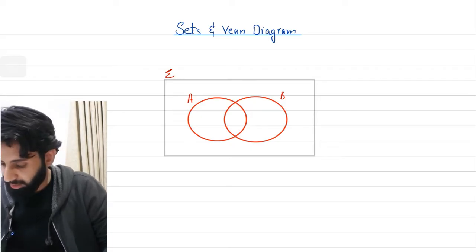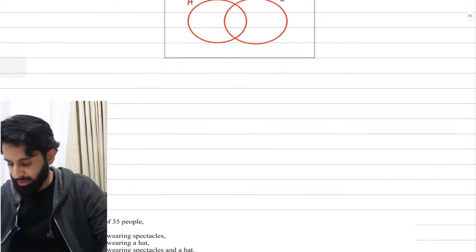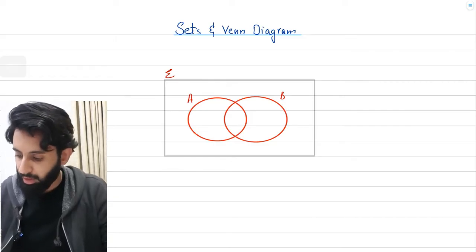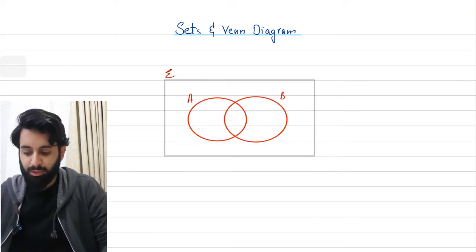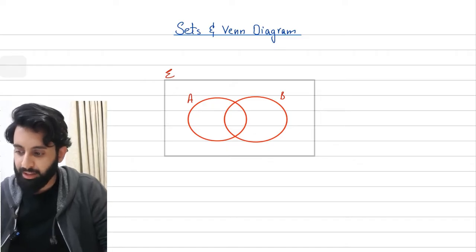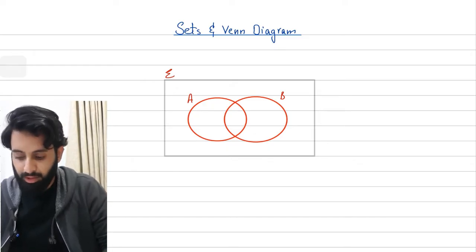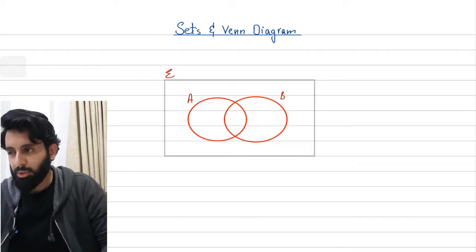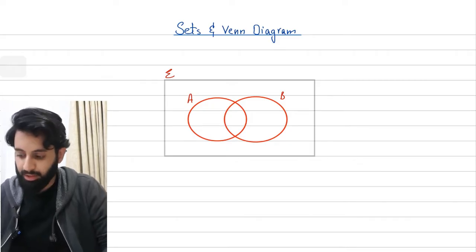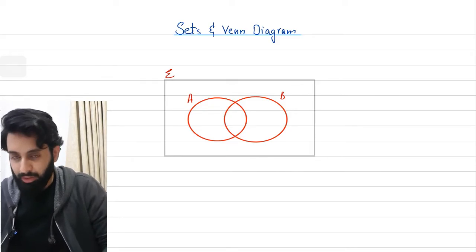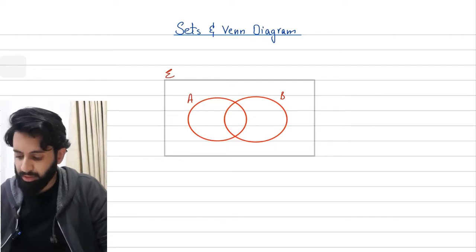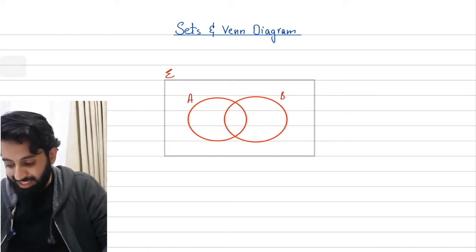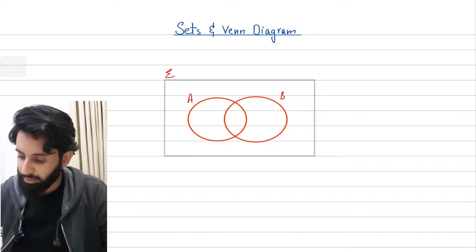Without wasting any time, let's get started with sets and Venn diagrams. Before I jump into the word problems, it's important to understand a bit of the theory. I always suggest to my students that whenever they're solving a question related to sets and Venn diagrams, they should read the question from start to finish so they can realize how many categories they're dealing with. Most of the time there'll be two, so let's say we have two sets: A and B.